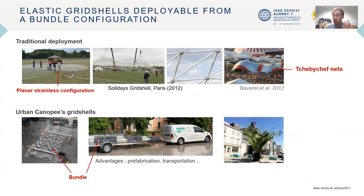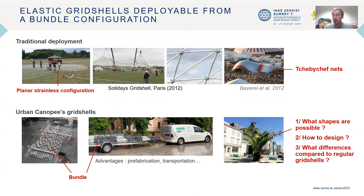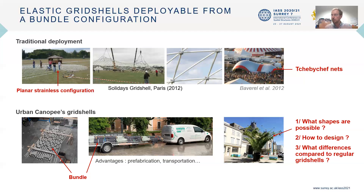The core of this presentation will be about what shapes are possible if you design a grid shell deployable from a bundle rather than a planar state, how can you design such an object, and what are the practical differences from a design perspective?